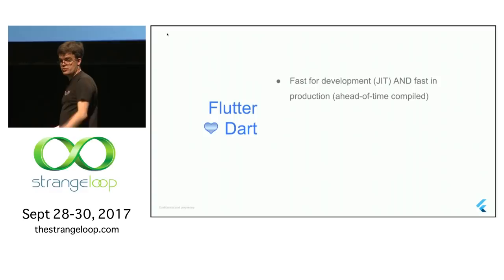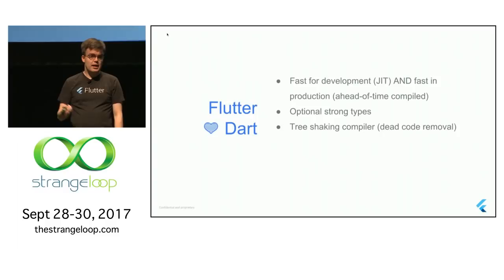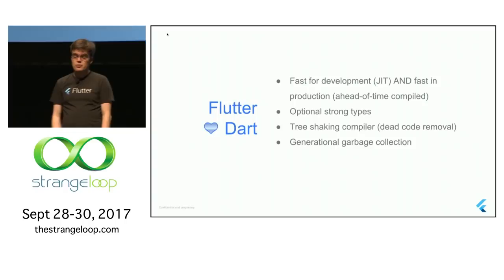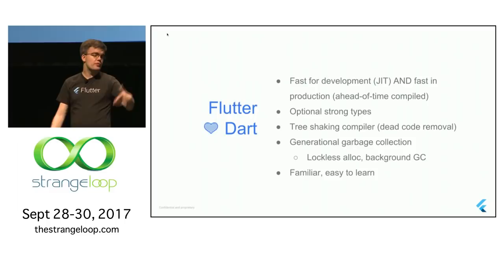Dart also has an optional but strong typing system, which those million-line apps leverage heavily and we do too. It has a tree-shaking compiler, which lets you use a large codebase but produce only a tiny binary containing only the parts you use. It has generational garbage collection — basically meaning fast: we do lots of tiny allocations that are very cheap to make and let go of. And finally, we found it familiar and easy to learn — if you've used Java or JavaScript, it will feel totally natural.